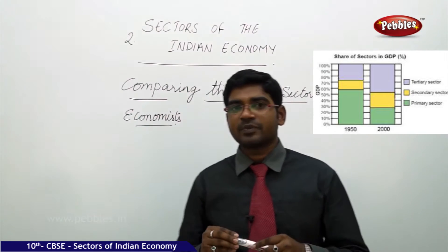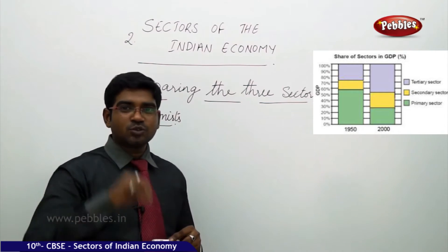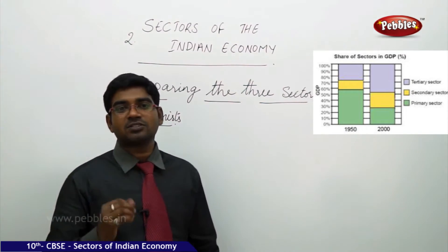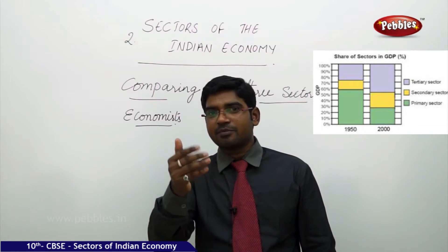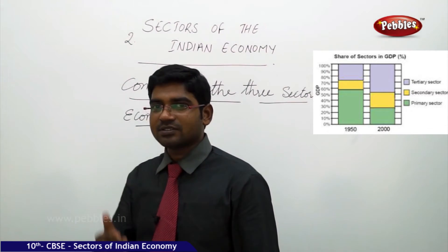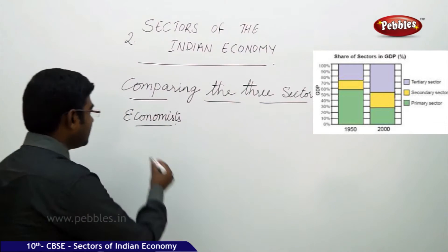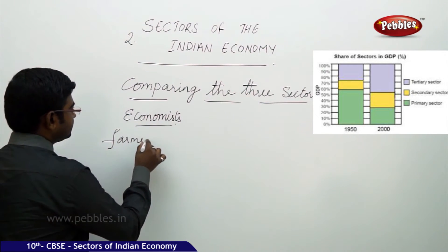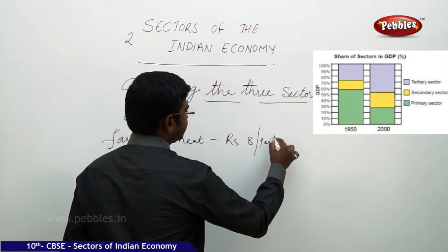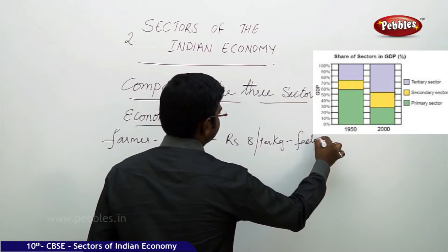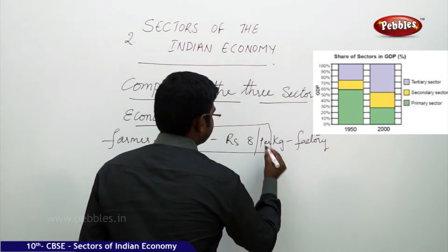There is a clear-cut demarcation about what should be added. We generally get confused thinking that milk is the end product so we add it, brick is the end product so we add it, and services are the end product so we pay for that. Let us take wheat as an example. A farmer sells his wheat for Rs. 8 per kg to the factory.